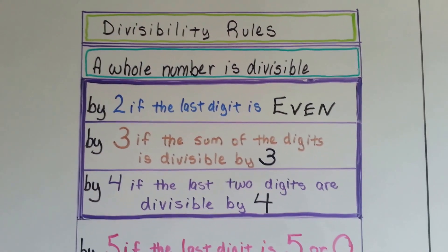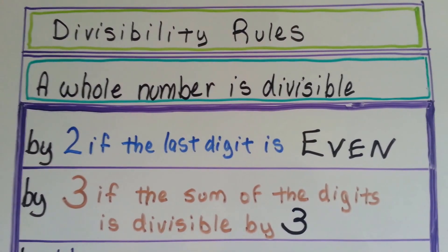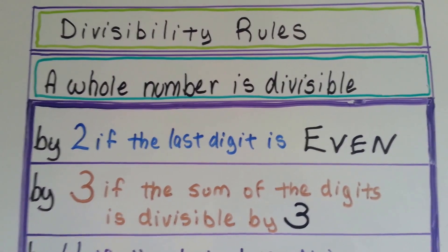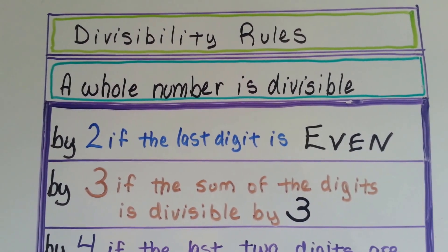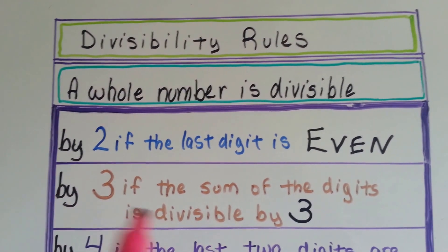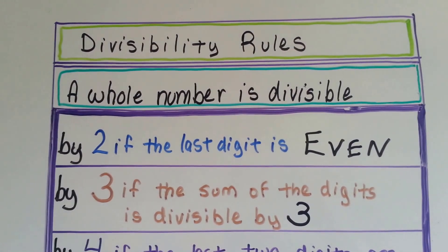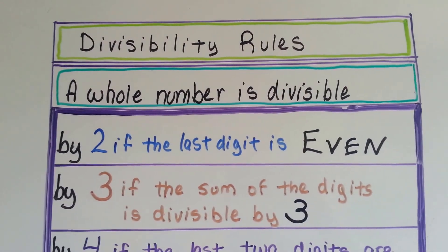A whole number is divisible by 2 if the last digit is even. It's divisible by 3 if the sum of the digits is divisible by 3. So if you add the numbers up, like the number 123, if you add the 1, 2, and 3, it equals 6. Then it's divisible by 3.